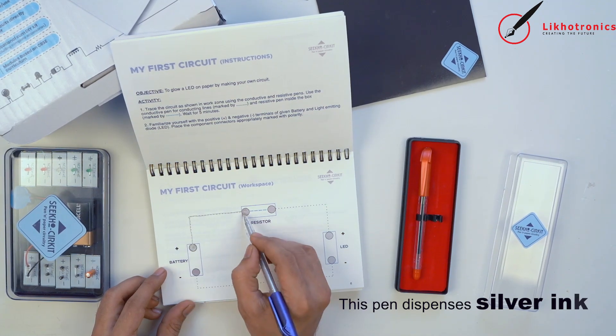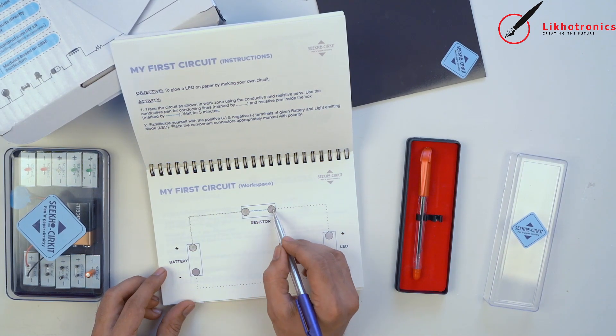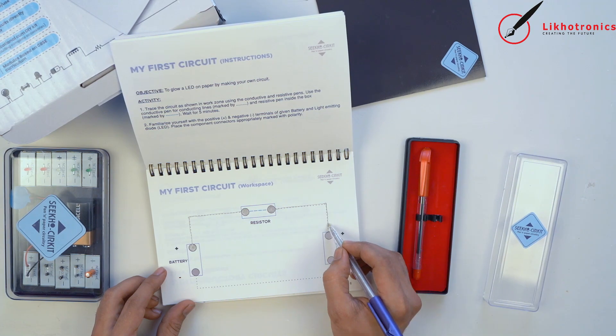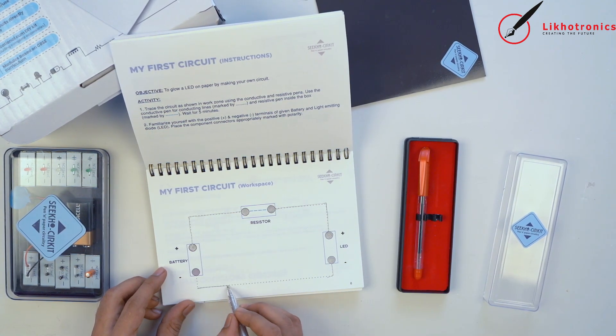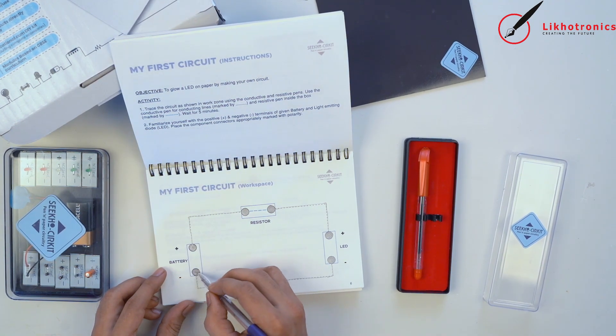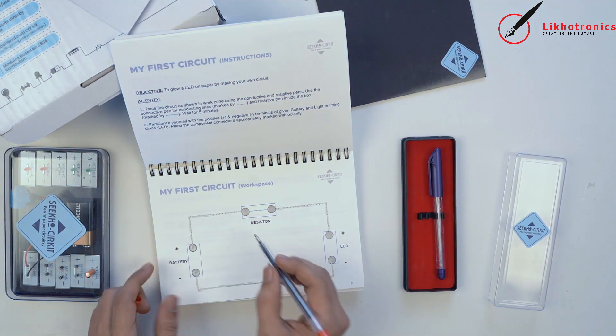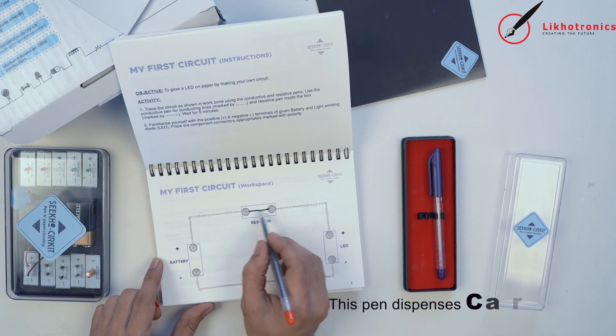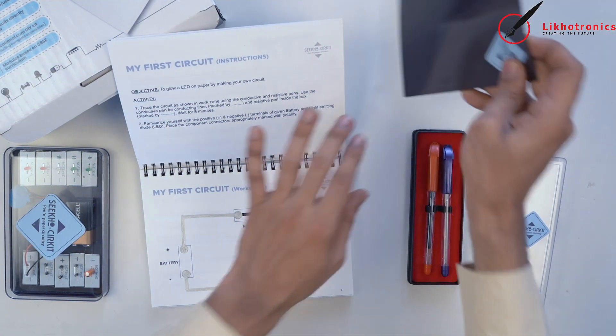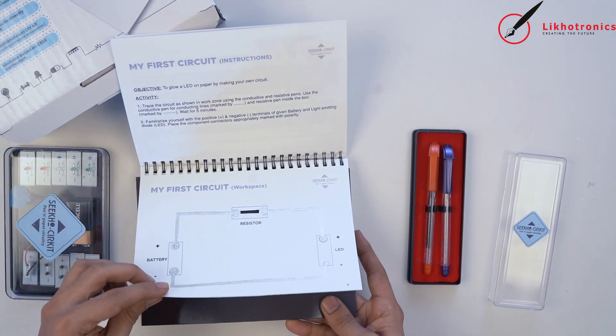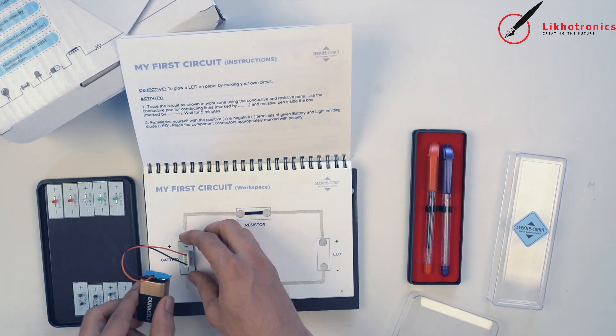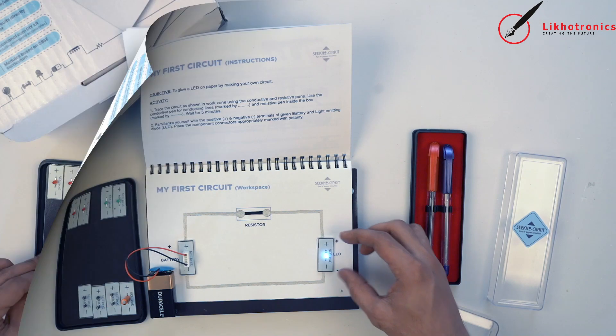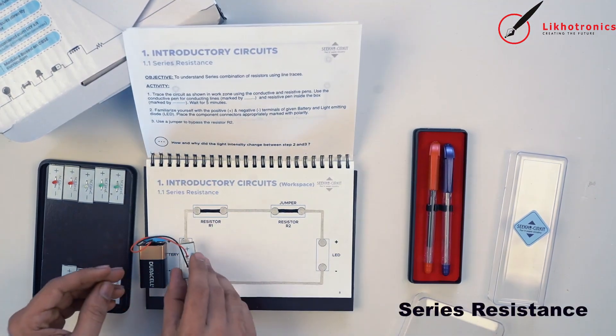These are not your typical ordinary pens. This one contains a silver metallic conductor ink, and this one contains resistive ink, which makes them special. Place the provided magnetic sheet for better connectivity, use suitable components, and there you have it—a complete working electrical circuit. It's that simple.